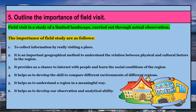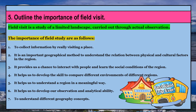Sixth, field visit helps us to develop our observation and analytical ability. One gains the ability to collect and analyze information and acquire problem-solving skills — they can identify cause and effect relationships. Seventh, field visit helps us to understand different geographical concepts such as location, region, place, size, etc. Eighth, field visit helps us to understand the relation between man and environment — for example, how man changes clothes in response to cold or hot weather.